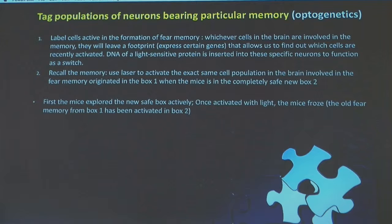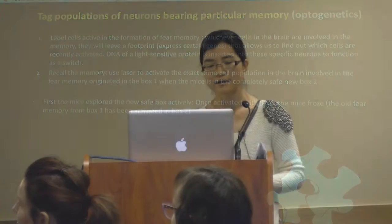To label the cells active in memory formation, they placed rats in box number one and gave them a mild foot shock, identifying which cells were involved in forming that fear memory — represented here by the blue dots. Cells involved in memory formation leave a footprint by expressing certain genes. A DNA sequence encoding a light-sensitive protein was then inserted into those specific neurons to function as a molecular switch, allowing those cells to be labeled and controlled.